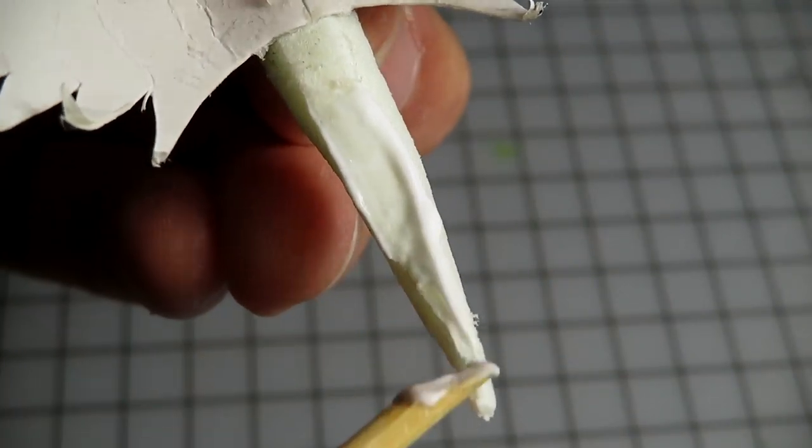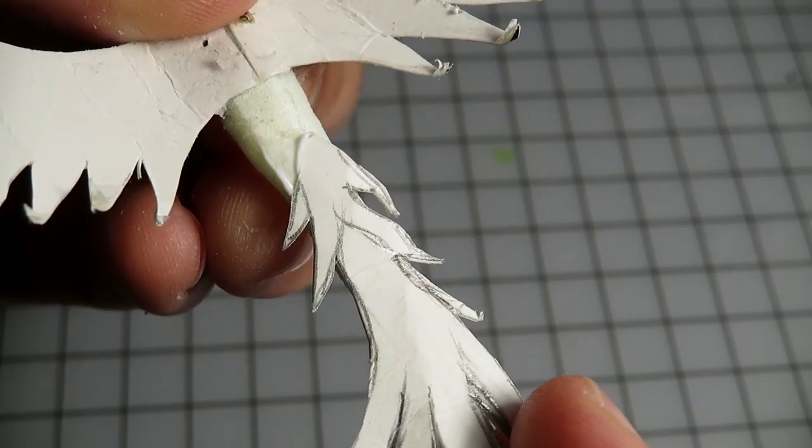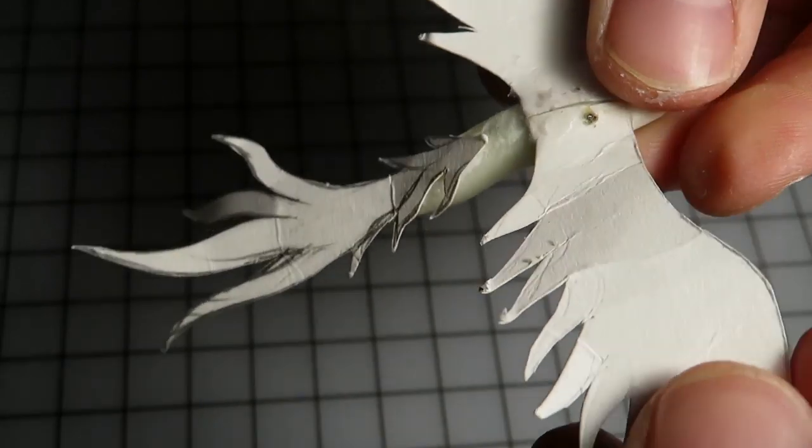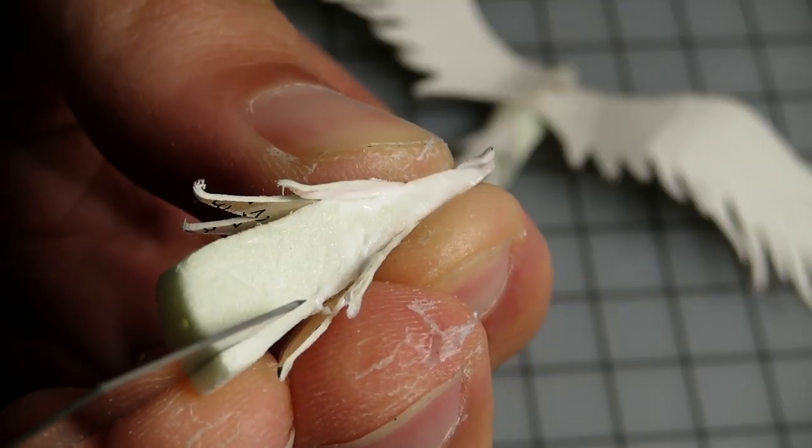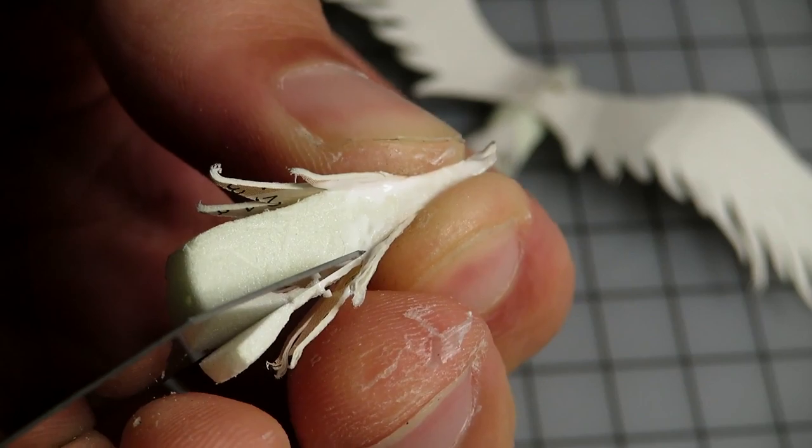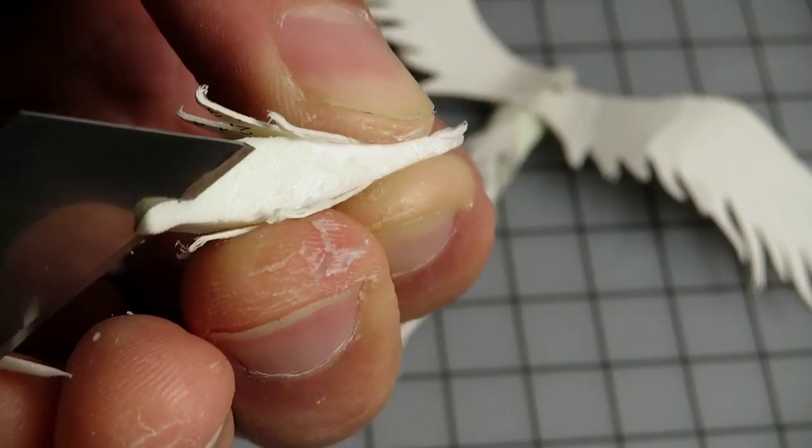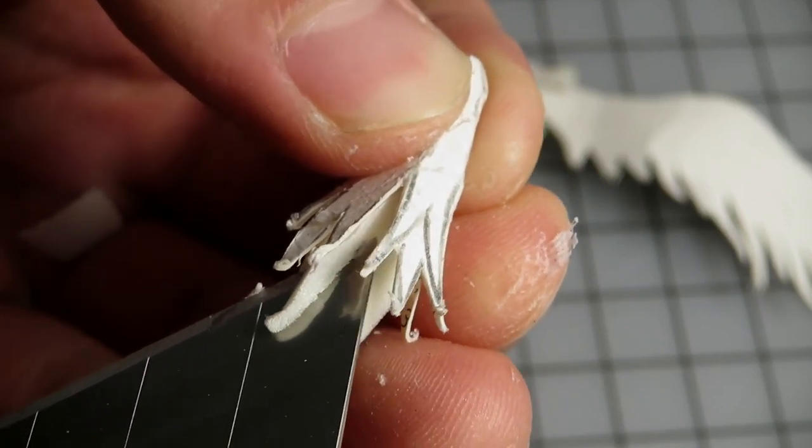Once you think the tail is good, you can just glue it on the foam piece. There we go. We will cover the gaps later in this video. Now back to the head. Shape the neck by cutting away foam until it is somewhat round. And again, this is not precision work. The gaps will be covered later.